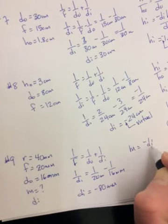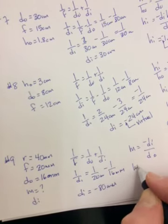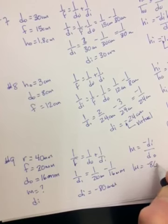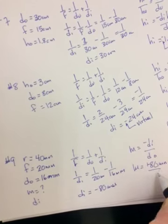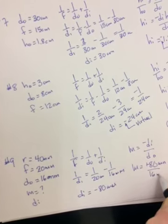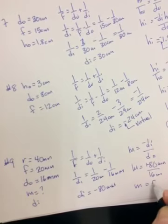And then magnification, negative DI over DO. So negative 80, negative negative, so positive, over 16. Magnification should be 5.